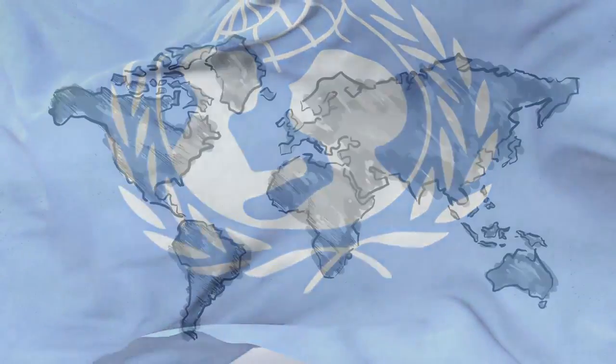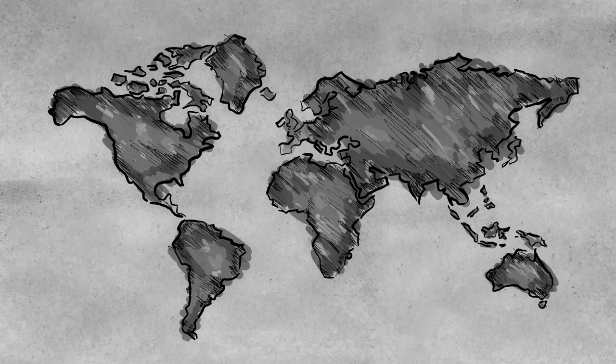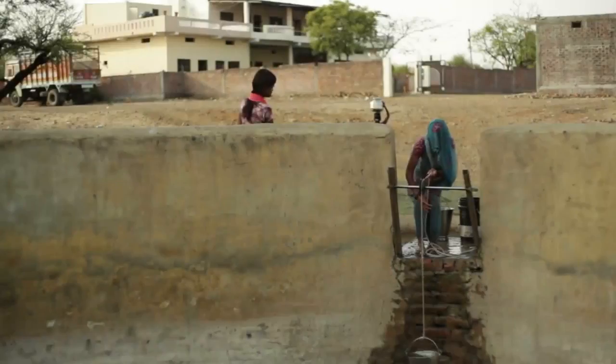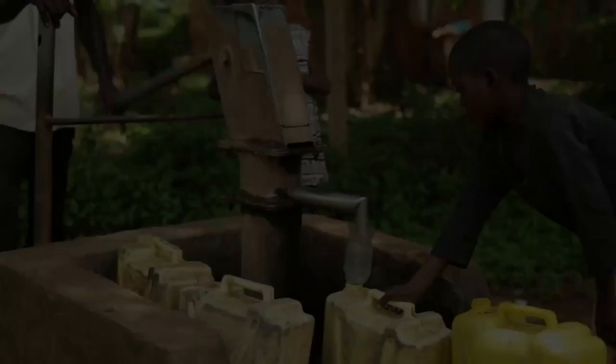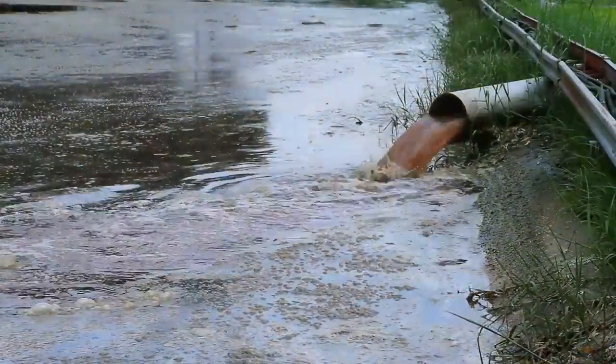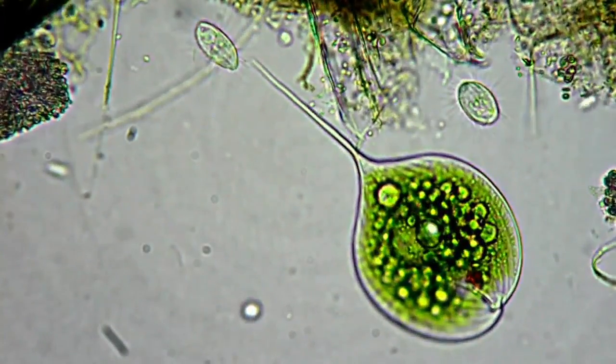8 out of 10 people without access to clean water live in rural areas. The untreated water contains unpalatable pollutants such as turbidity, dirt, and invisible deadly contaminants.